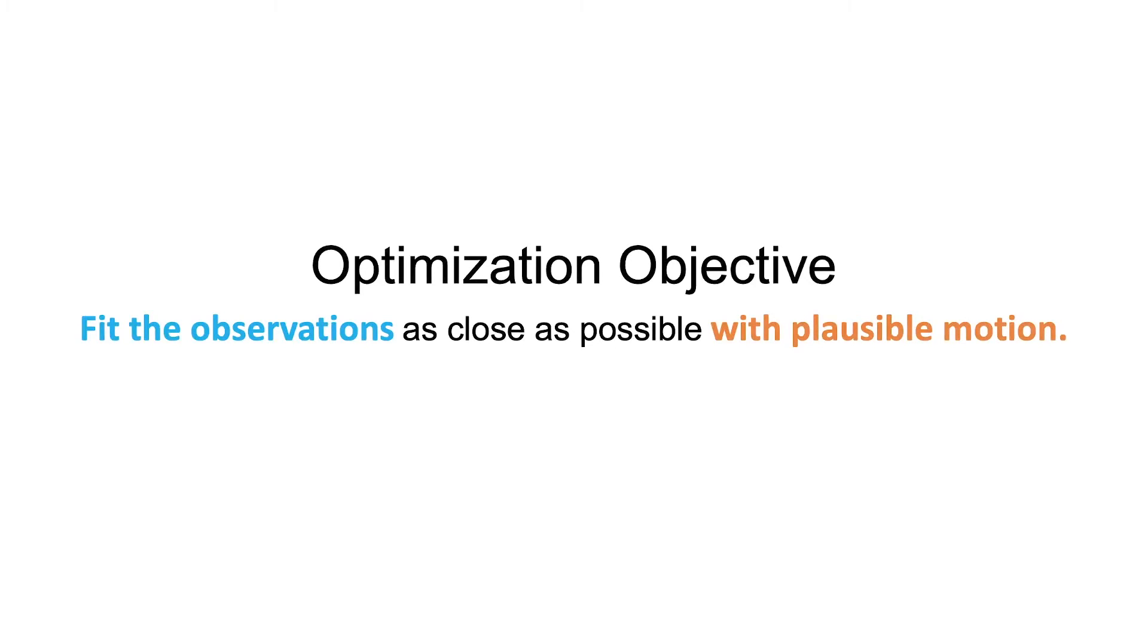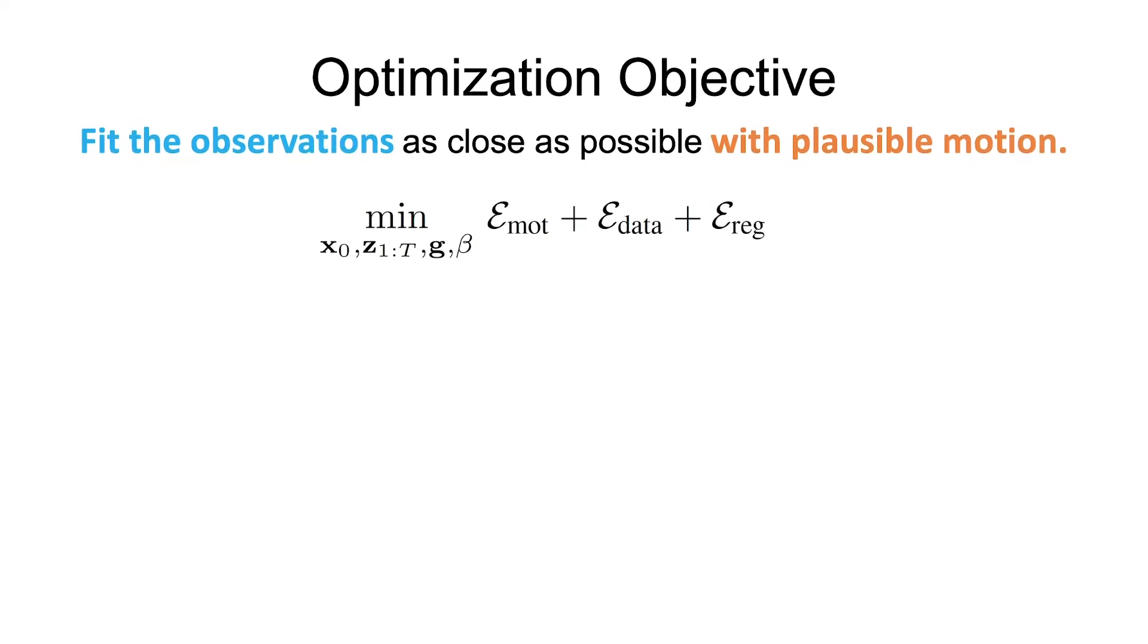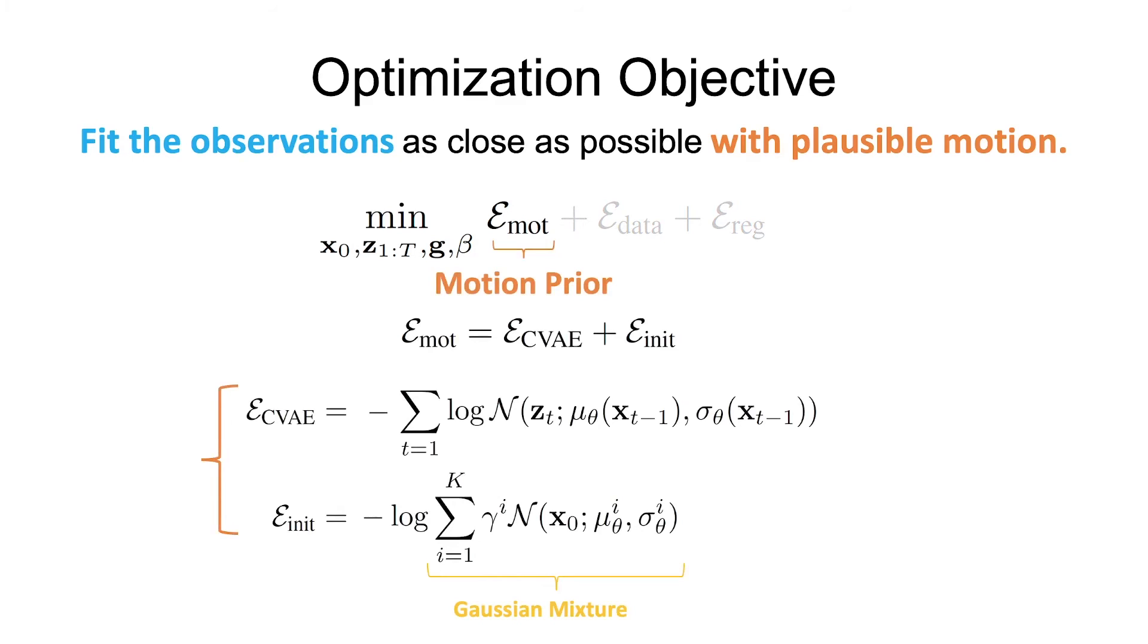The objective of the optimization is to fit observations as close as possible while keeping motion plausible. This is done with three objectives.